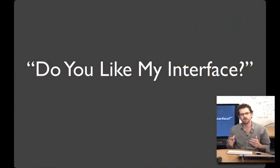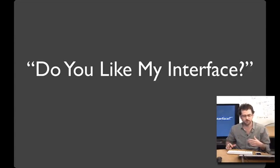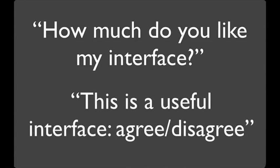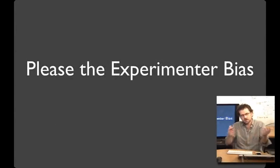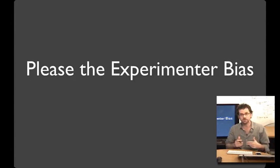One of the most common things that people ask when running studies is, do you like my interface? It's a really natural thing to ask, but it's problematic on a whole lot of levels. It's not very specific. People try to improve it by asking something like, how much do you like my interface on a one to five scale, which adds a patina of scientificness — but really it's just the same thing. People are nice, so they'll say sure. This is the please-the-experimenter bias, which can be especially strong when there are social, cultural, or power differences between the experimenter and the participants. Indrani Mehdi and colleagues showed this effect in India, where it was exacerbated when the experimenter was white.